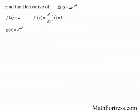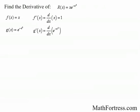The derivative of x is just 1. The derivative of g of x requires the application of the chain rule, where the outer function is e to the x and the inner function is negative x squared. Applying the chain rule, we have that the derivative is equal to e raised to the negative x squared times negative 2x, which simplifies to negative 2x times e raised to the negative x squared.